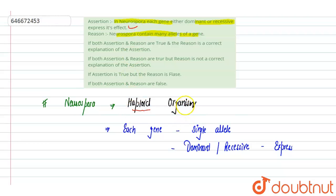Reason is: Neurospora contains many alleles of a gene. This is incorrect because we have already discussed, in case of Neurospora, each gene has a single allele because it is haploid, so there are no chances for having multiple alleles.